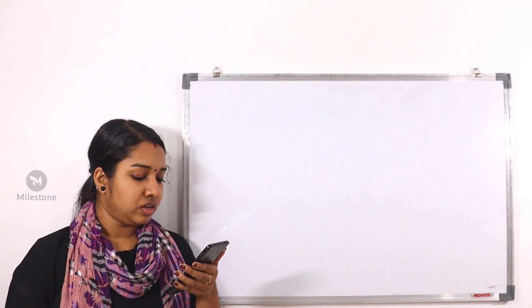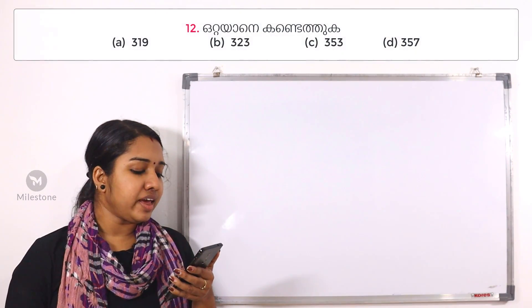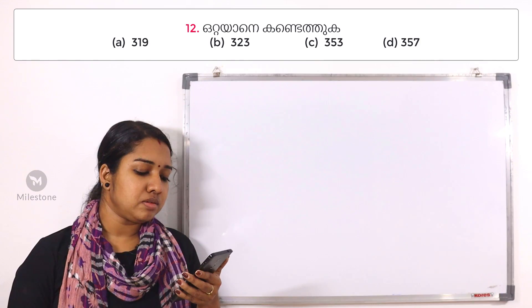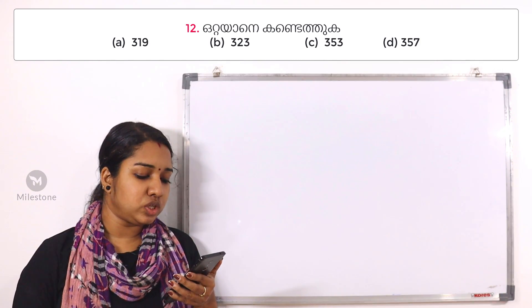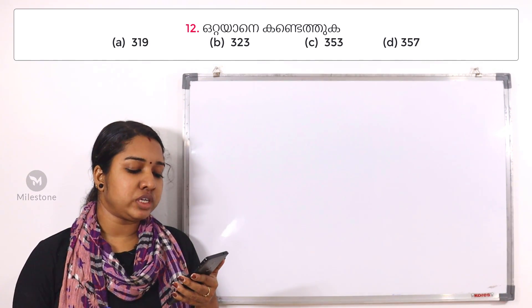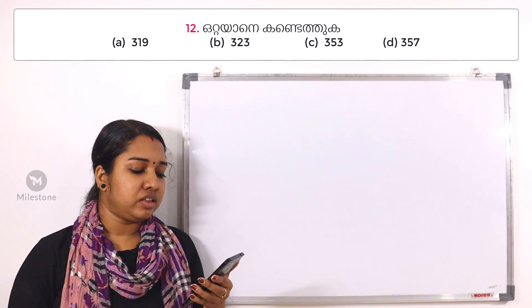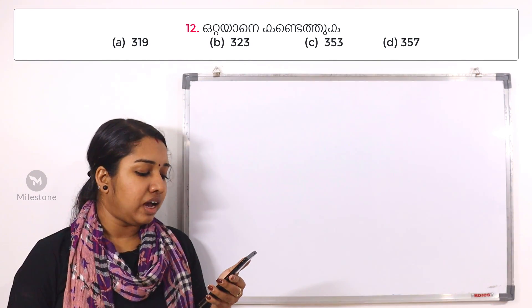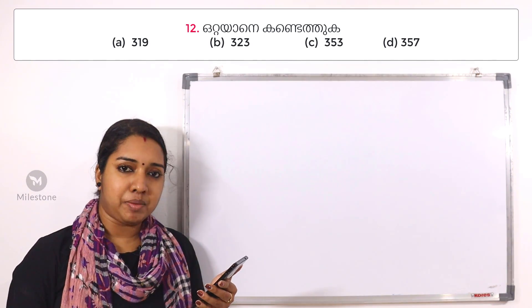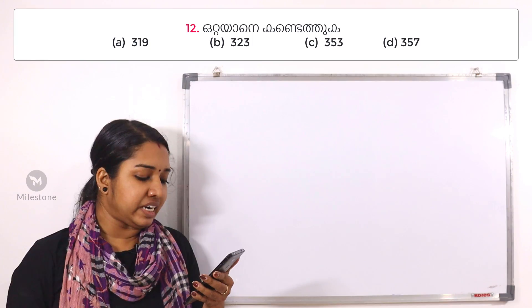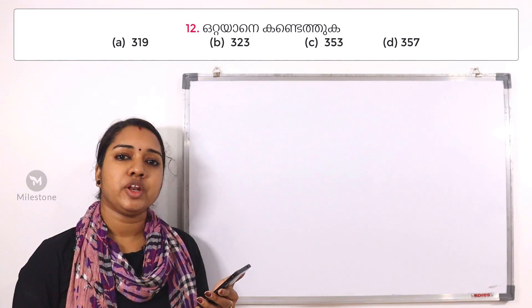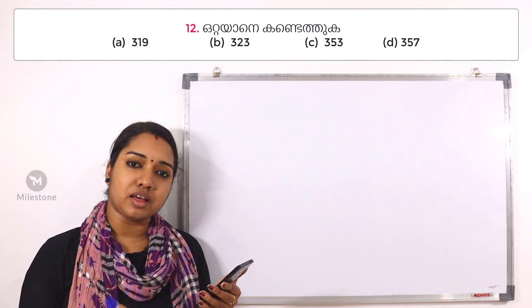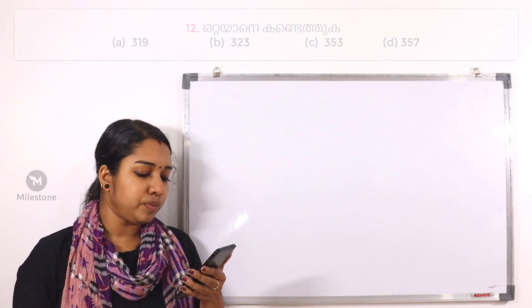Next question: How many of these options are prime numbers? The options are 310, 323, 3803, and 3807. The answer is 3803 — that is the prime number. The other options (ABD) are not prime. 3803 is indeed a prime number.